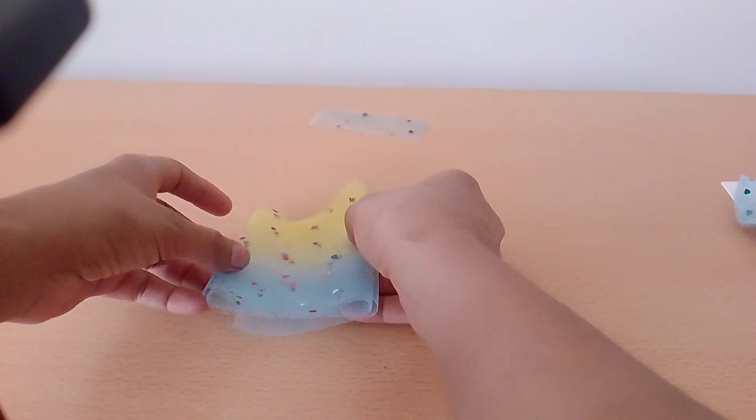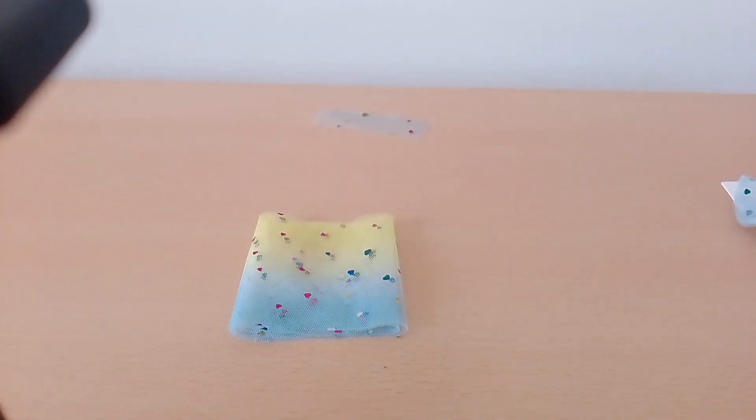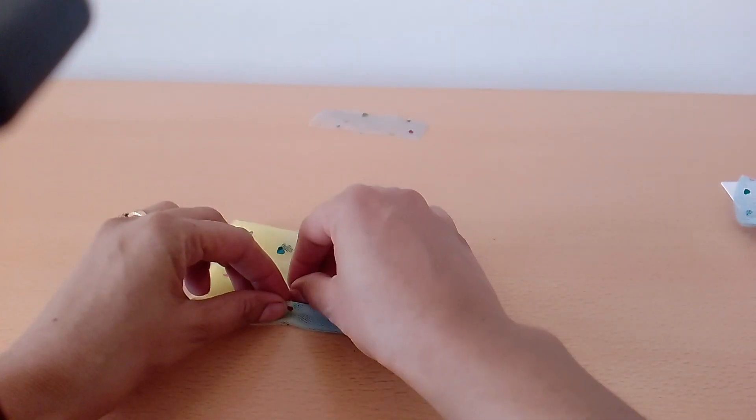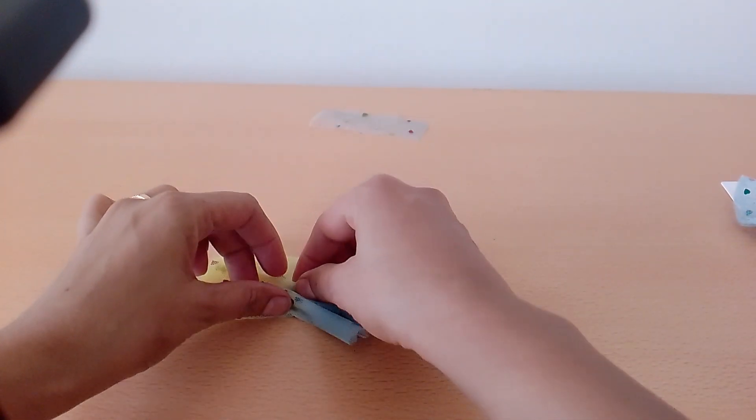When you are done with the folding like this you have to pinch the bow. While pinching the bow keep the outer edges outward.